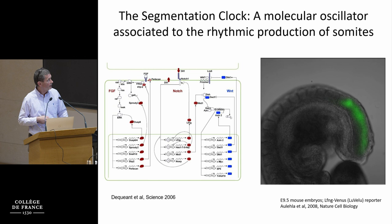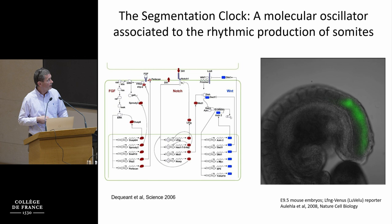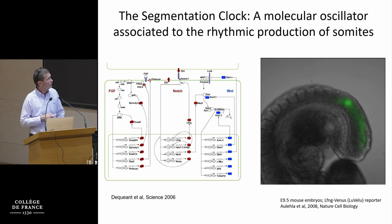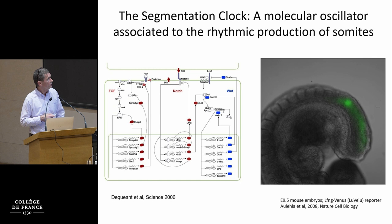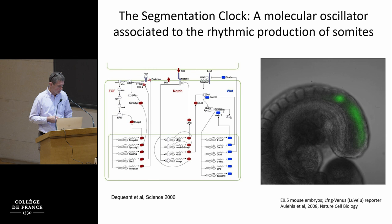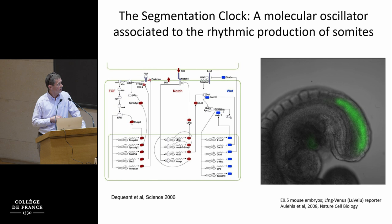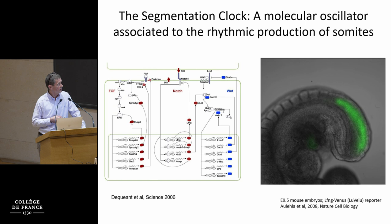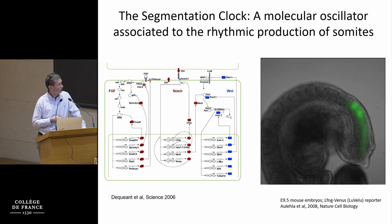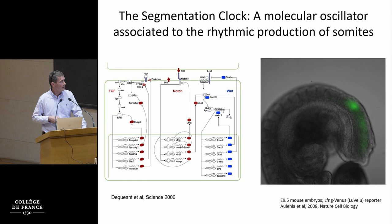Work from many labs, including mine, has now shown that this oscillator is a gene regulatory network involving three major signaling pathways, at least in mouse and humans: FGF, Notch, and Wnt. The so-called cyclic genes that show these traveling waves are mostly negative feedback inhibitors of these pathways, which led to mathematical models involving transcription feedback loops with delays — for instance, for the HER genes, and for the S7 gene that is able to negatively regulate its own expression, acting as a pacemaker for the Notch part of the oscillator.